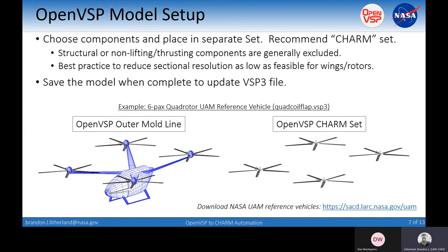Let's get into a bit about your OpenVSP model setup. The components are easy to write out and will show where we pull things in from a CHARM set. Whatever you want to run from CHARM, you just include in a VSP set. Structural or non-lifting thrusting components are generally excluded. Some best practice is to reduce your sectional resolution as low as feasible for things like wings and rotors, because each section gets written out as a section in the rotor model.